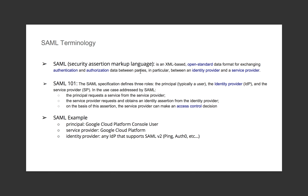So a little bit about some terminology. The single sign-on flow for Google Cloud supports SAML version 2.0. If you're not familiar with SAML, think of it as an XML-based markup language for exchanging data between a service provider — in this case Google Cloud Platform — and an identity provider. In this example I'll be using Auth0 as my identity provider.